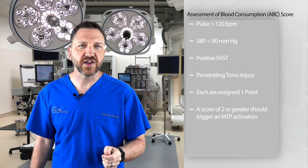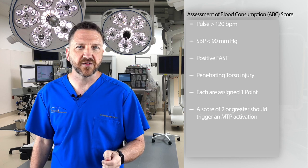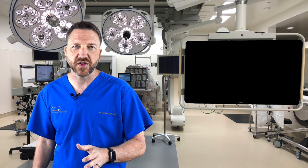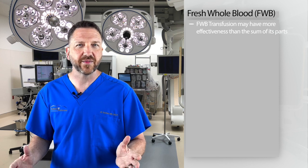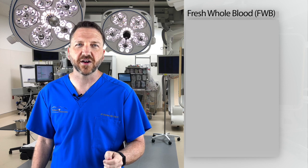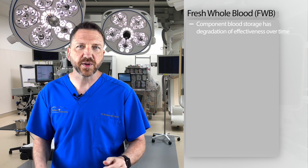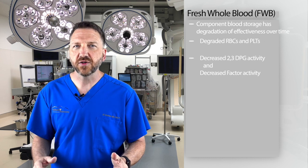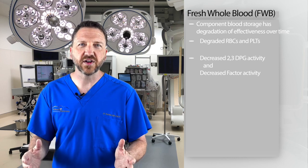Our understanding of the physiology of hemorrhagic shock and optimal resuscitation continues to evolve. There is ongoing research in exciting areas, such as evaluating the risks and benefits of pre-hospital blood and plasma administration. More recently, with the experience gained in Afghanistan and Iraq, a handful of trauma programs have instituted massive transfusion protocols that utilize whole blood transfusion instead of component therapy. Fresh whole blood transfusion may have more effectiveness than the sum of its parts. This is at least partially related to the changes that occur in packed red blood cells, platelets, and plasma components during their storage, including time-sensitive degradation of red blood cells and platelets, decreased 2,3-DPG activity, as well as decreased factor activity.